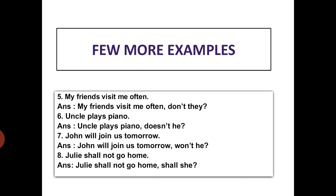'My friends visit me often.' Again, no associative verb is directly given. The sentence is in simple present tense, and as the subject 'my friends' is in plural form, we need to use 'do' as the associative verb. For 'my friends,' the pronoun will be 'they.' Question tag: 'don't they?'